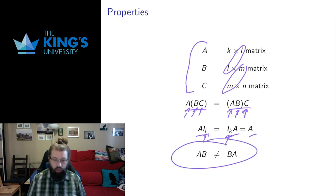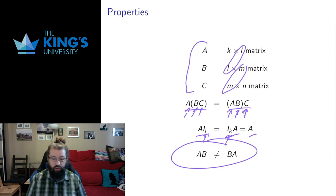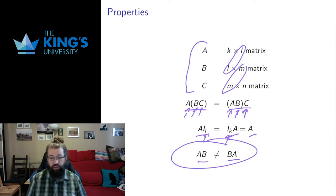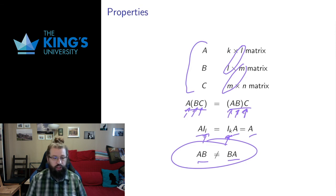Lastly, matrix multiplication is in general not commutative, and it's not even anti-commutative like the cross product. AB and BA can often be very different transformations. We'll give examples later of how the order of transformations matters. This is our first example of a multiplication where order really matters — a fundamentally non-commutative way of doing things.